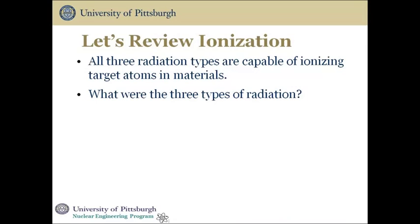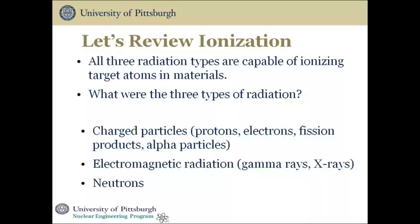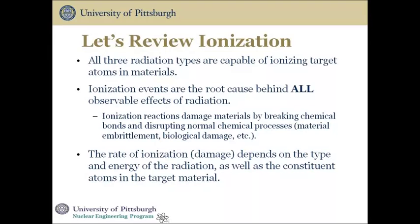Do you remember the three types of radiation capable of ionizing atoms in human tissue and structural materials? Those radiations were charged particles — protons, electrons, fission products, and alpha particles — electromagnetic radiation such as gamma rays and x-rays, and neutrons. We need to remember that ionization events are the root cause behind all observable effects of radiation, and ionization reactions damage materials by breaking chemical bonds and disrupting normal chemical processes.